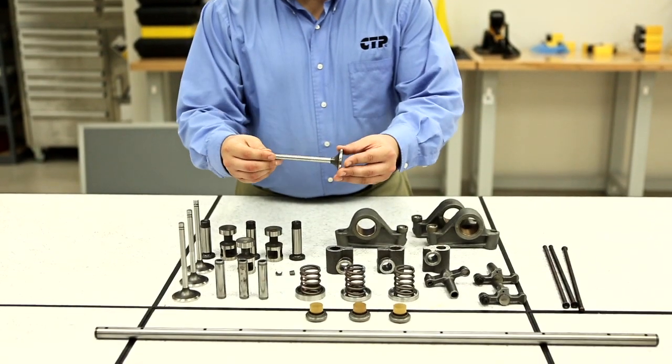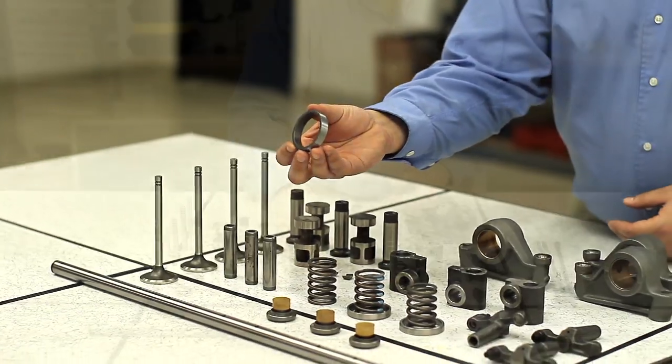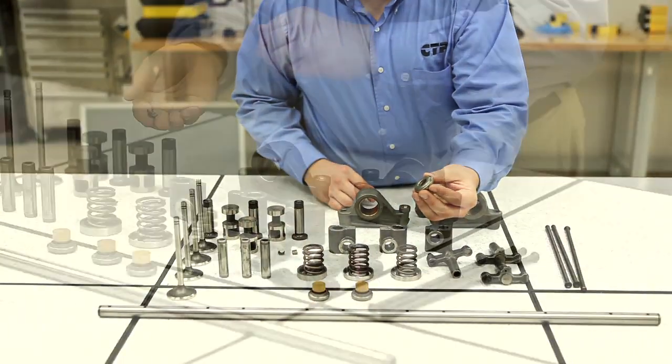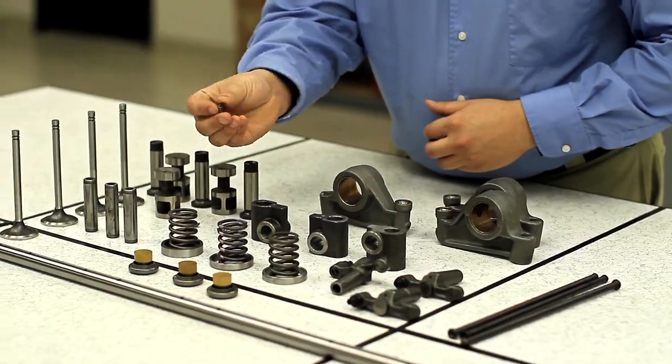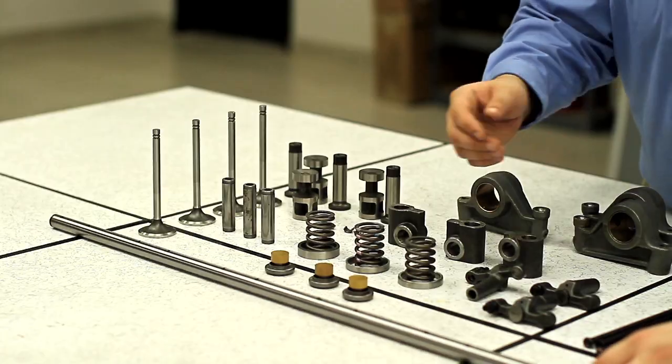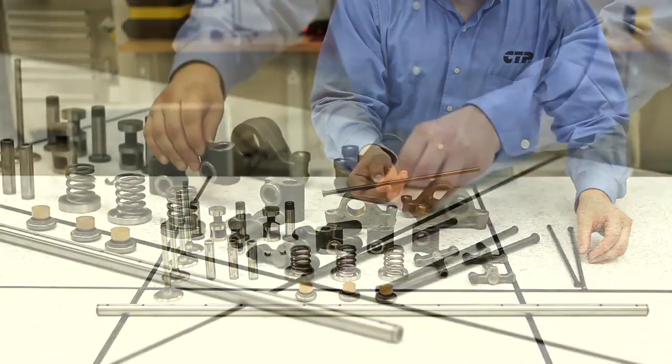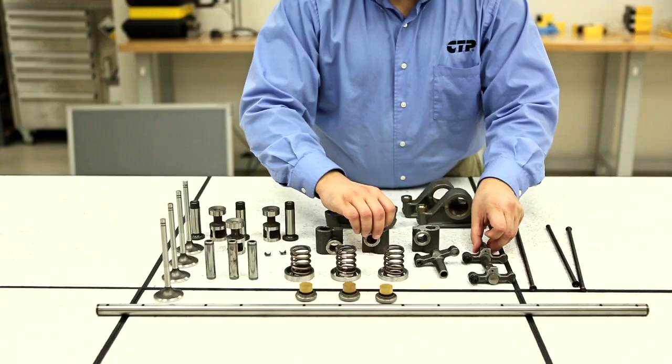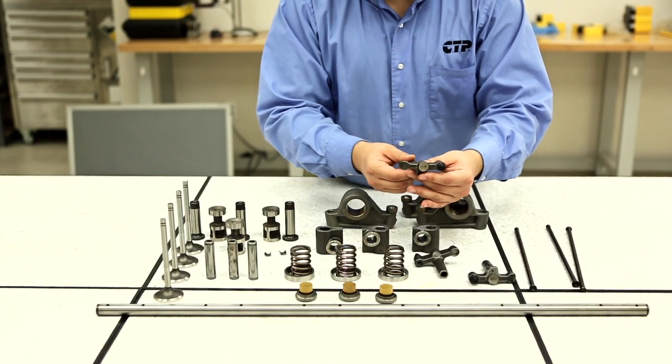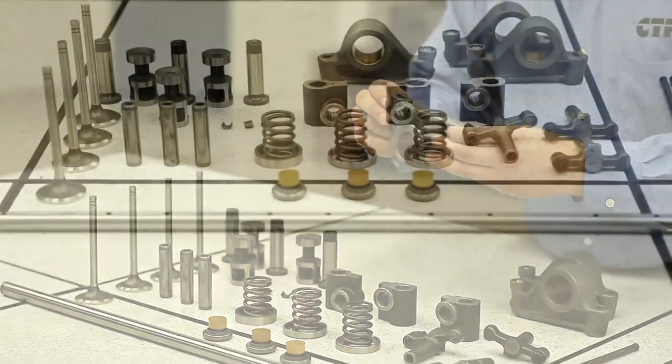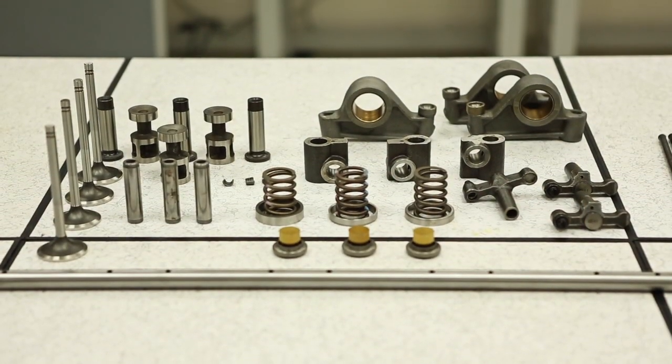The valves, valve guides, valve seats, valve springs, roto coils, locks, lifters, shaft, pushrod, bracket, bridge, and rocker arms are all components held in the valve mechanism.